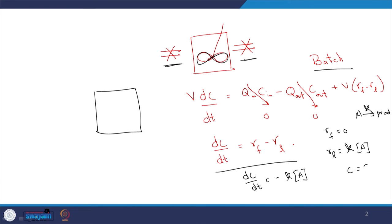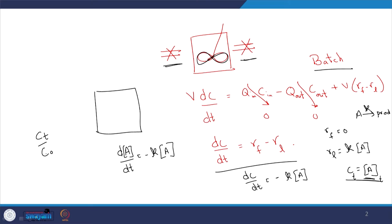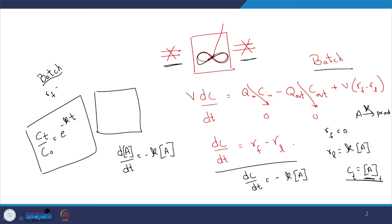Plugging that in, we get dc/dt = −k·[A]. Integrating, we get ct/c₀ = e^(−kt), where ct is concentration at time t and c₀ is the initial concentration. This is the result for the batch reactor for the case of no rate of formation and first-order rate of loss.